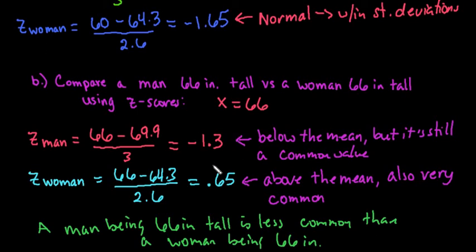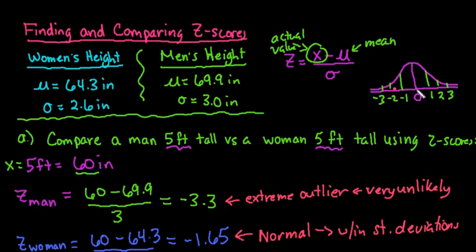So we can look at the z-scores to see which one is more common, which one is less common. And in this case, since the negative 1.3 is more extreme or it's further away from the mean, remember that the z-score is just telling you how far above or below the mean is. So the closer it is to zero, the more likely it is to happen. The further away from zero, the less likely it is to happen.